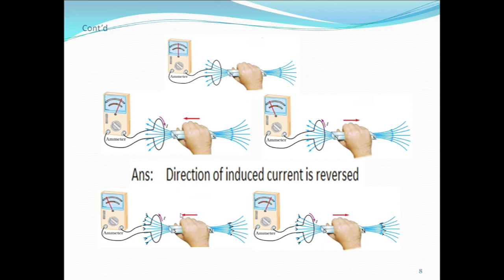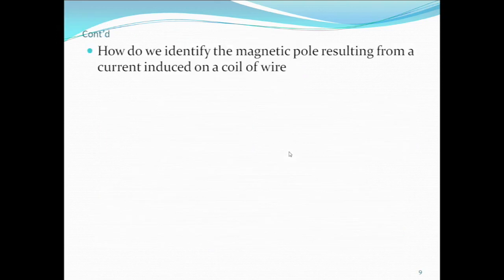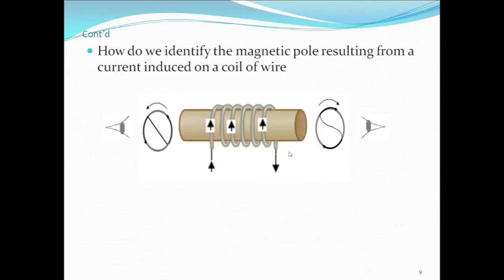If the south pole is approaching the coil, the current will be in one direction. If the south pole is moving away, the current will be in the opposite direction. Approaching north and receding south produce electric current in the same direction.